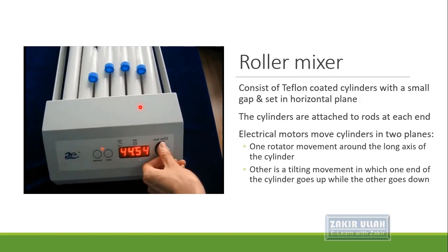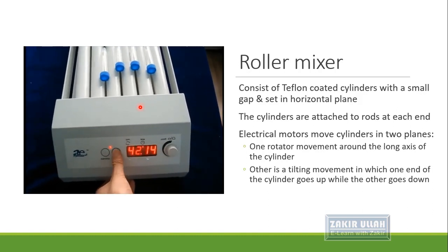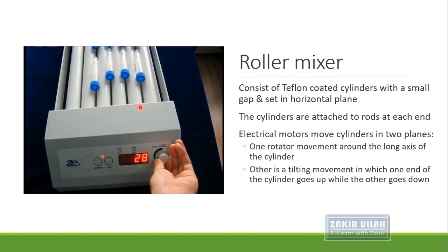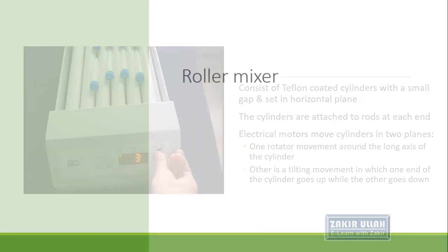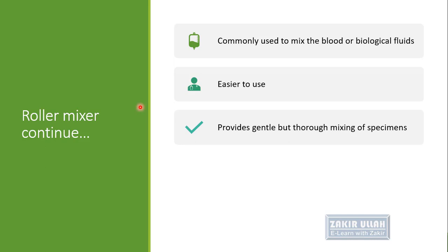We can set the RPM or the speed of rotation and tilting of the roller mixer. The roller mixer is commonly used to mix different types of biological fluids, especially blood. For example, in a whole blood count or complete blood picture, we take a blood sample in an EDTA tube, and before testing we place that sample on the roller mixer for at least two to three minutes.